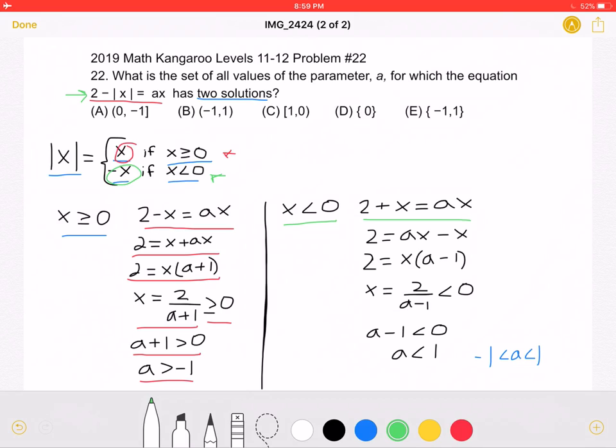Simplifying, we would get that 2 is equal to Ax minus x, and then we would factor out an x and divide by A minus 1 in order to isolate x. And we would know that 2 over A minus 1 is less than 0.